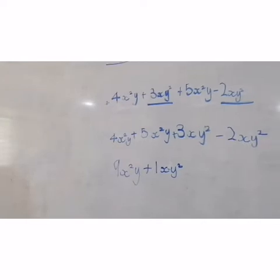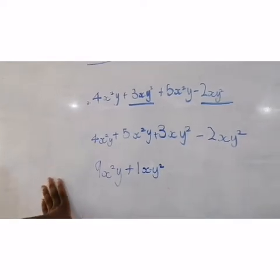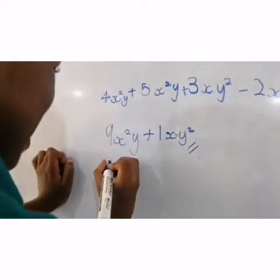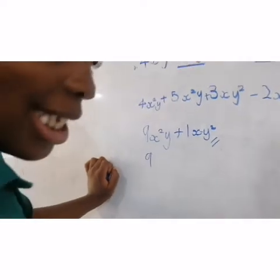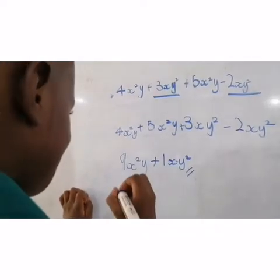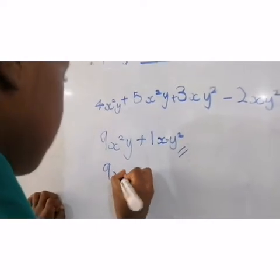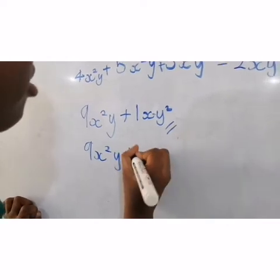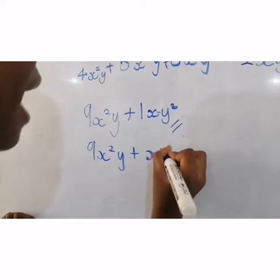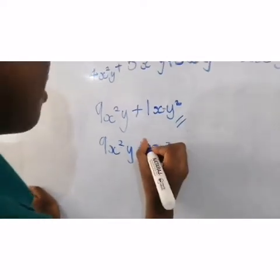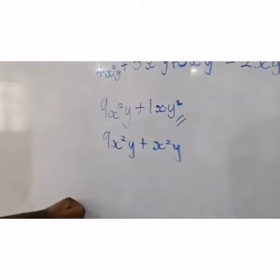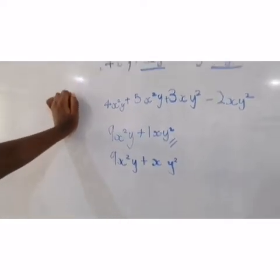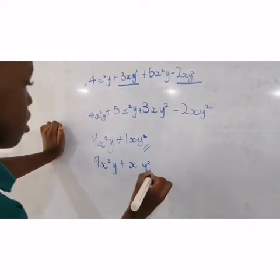So because there are no further like terms, we have our answer: 9x squared y plus xy squared. That's y squared — make sure you write it correctly.